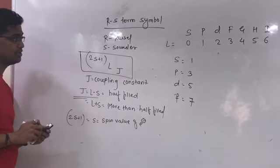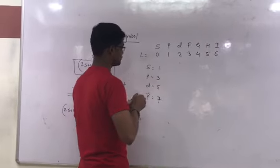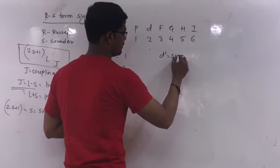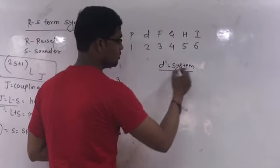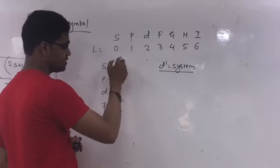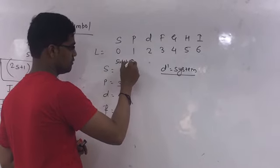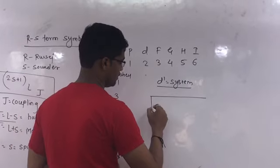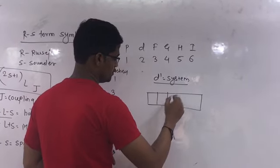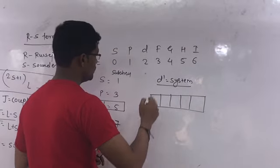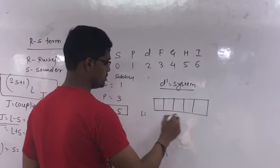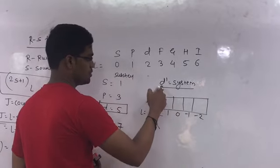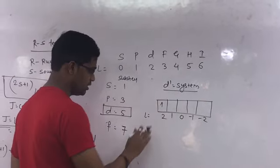First, suppose D1 system, that is in D orbital, 1 electron present. We know that D orbital subshell is 5. So, take 5 boxes: 1, 2, 3, 4, 5. L values are 0, minus 1, minus 2, 1, 2. We have 1 electron, so put 1 electron in.